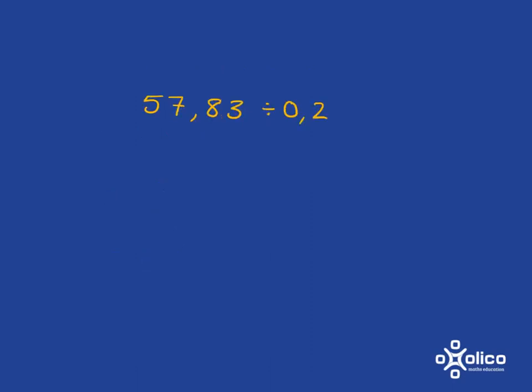Okay try this one for yourself. Pause the video and try it now. Okay your first step should have been to rewrite it as a fraction. Then you know you need to get a whole number in the denominator so you multiply by 10 and so you don't change things you must do the same to the top and so you get 578.3 divided by 2.